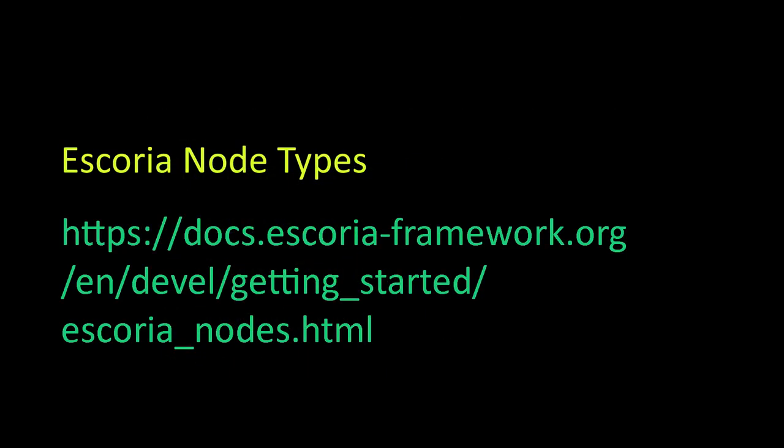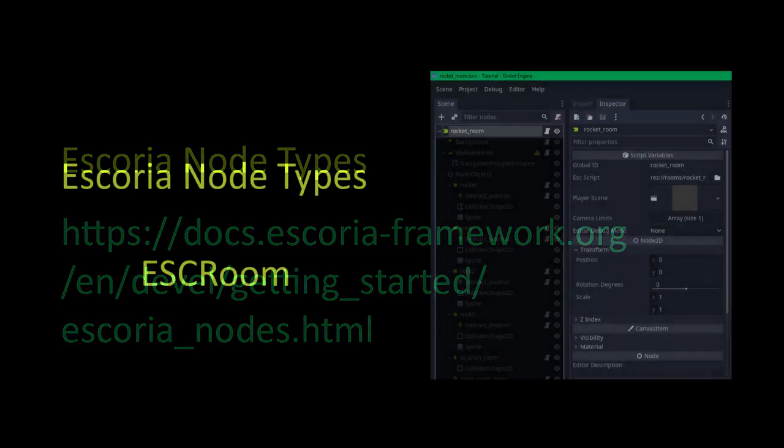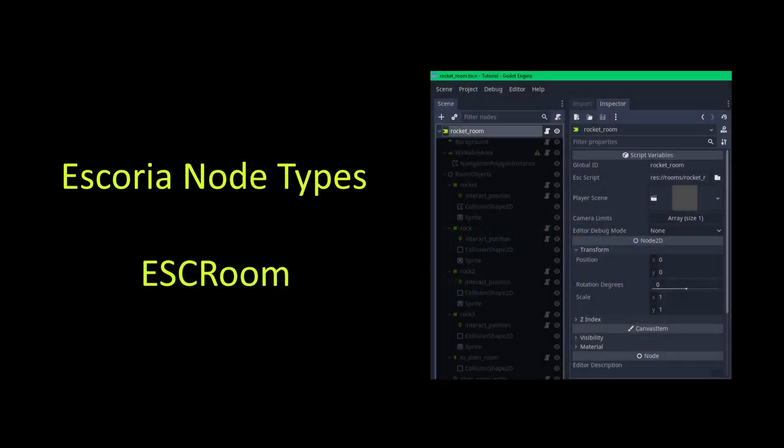Escoria uses custom Godot node types for its nodes. The custom nodes define various things in the adventure game. The main node types are Escoria rooms — each scene in your game is implemented as an Escoria room, and this node type will be the root node of every scene. I refer to game scenes as rooms in the video, so a room could be a bedroom, a street, or the deck of a ship depending on your game.